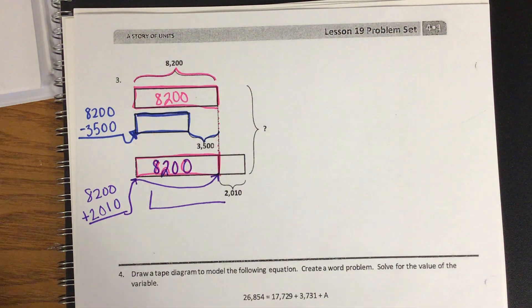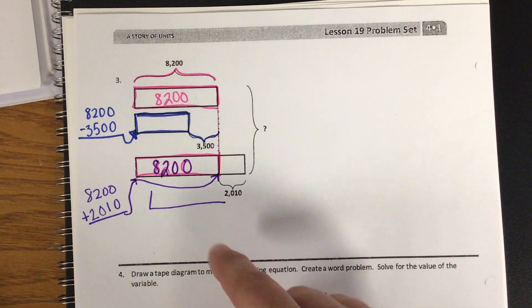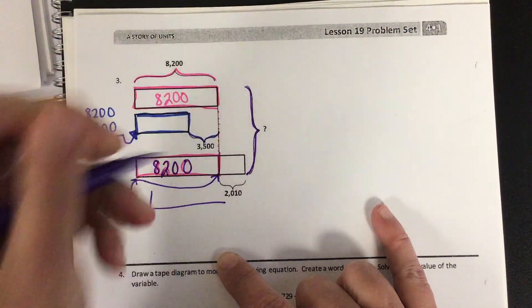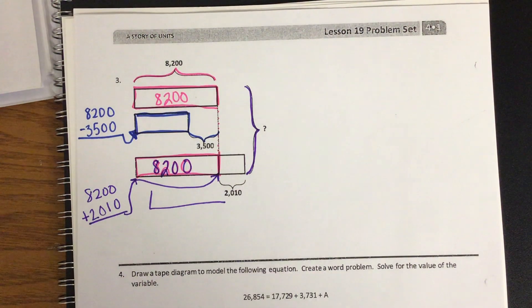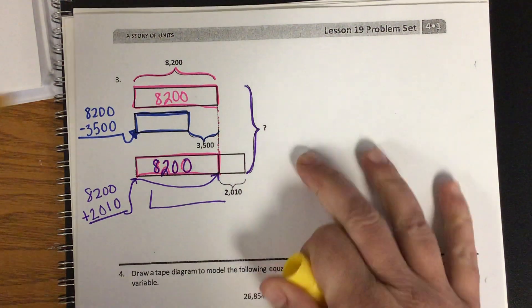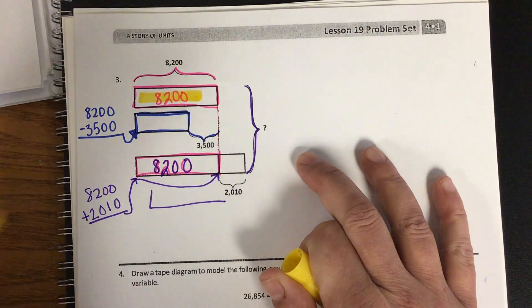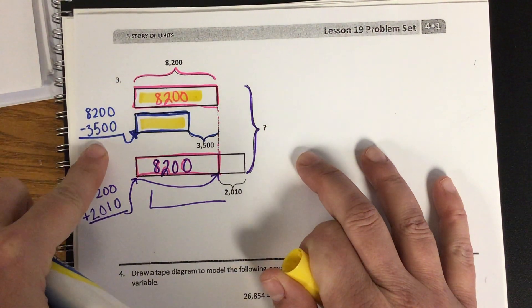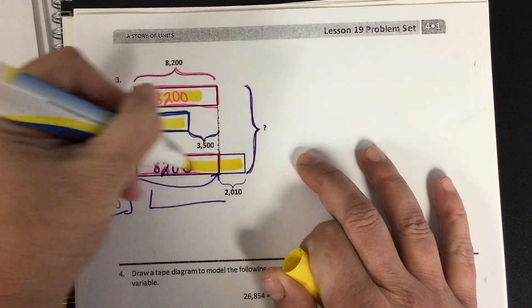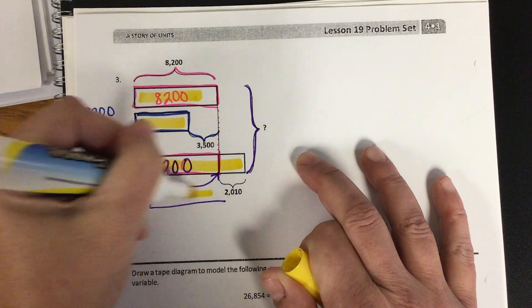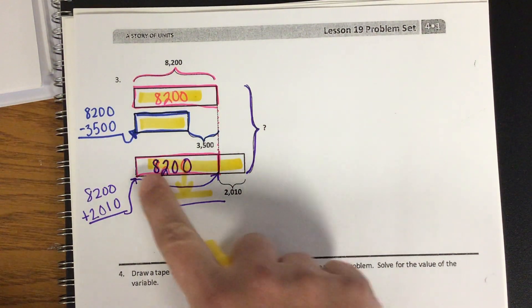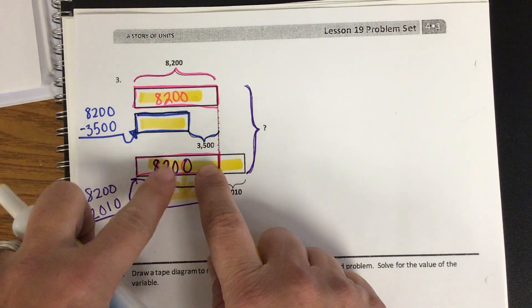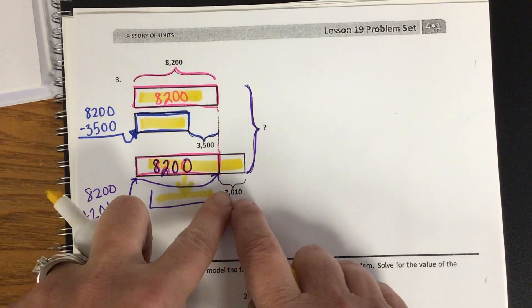Then the last part means you have to add them all up. So you're going to take this number and this number. Remember, you get this number from subtracting and this number. I would put it right here. You're going to get the total here by taking 8,200 and 2010.